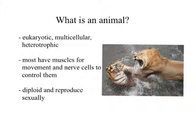So what is an animal? An animal is a eukaryotic, multicellular, heterotrophic organism. It's made of eukaryotic cells, there are tons of cells in the organism itself, and it's heterotrophic, which means it has to consume other things in order to get energy and survive. Most animals are going to have muscles for movement and nerve cells, and depending on the complexity, perhaps a brain or a bundle of nerve cells.